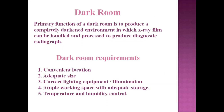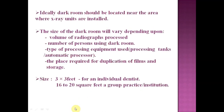Regarding the dark room — this is the area where x-ray film processing takes place. The primary function is to produce a completely darkened environment in which x-ray film can be handled and processed to produce a diagnostic radiograph. Requirements include convenient location, adequate size, and adequate illumination, ample working space, and temperature and humidity control. Ideally the dark room should be located near the x-ray units. Size varies depending on volume of radiographs processed, number of persons using the room, and type of processing equipment.